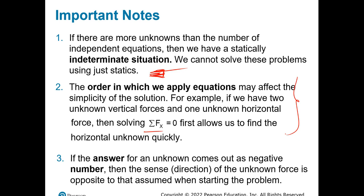If the answer for an unknown comes out as a negative number — as we covered in the previous chapter — then the assumed direction is the opposite. If you assume positive is going right and you get a negative value, that minus sign tells you the direction you assumed was wrong, and the force actually goes the other way.